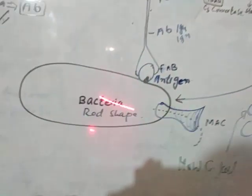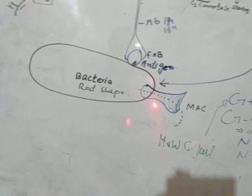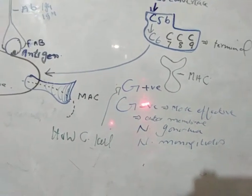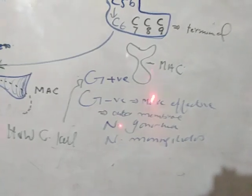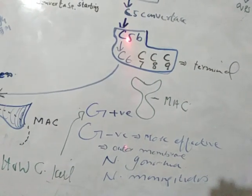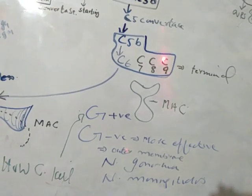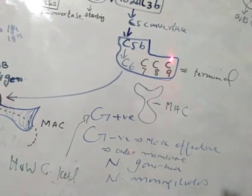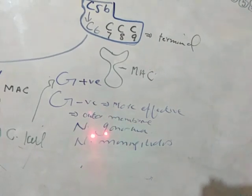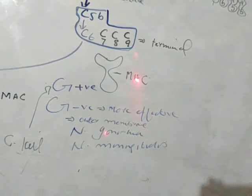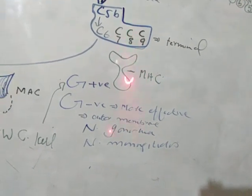The membrane attack complex kills bacteria by forming pores — like a drill — in the bacterial membrane. People who inherit a deficiency of MAC components C5 through C9 are susceptible to Neisseria bacteria infections, particularly Neisseria meningitidis, because the membrane attack complex cannot function. The MAC is most effective against gram-negative bacteria because gram-negative bacteria have an outer membrane that the complex can attack.